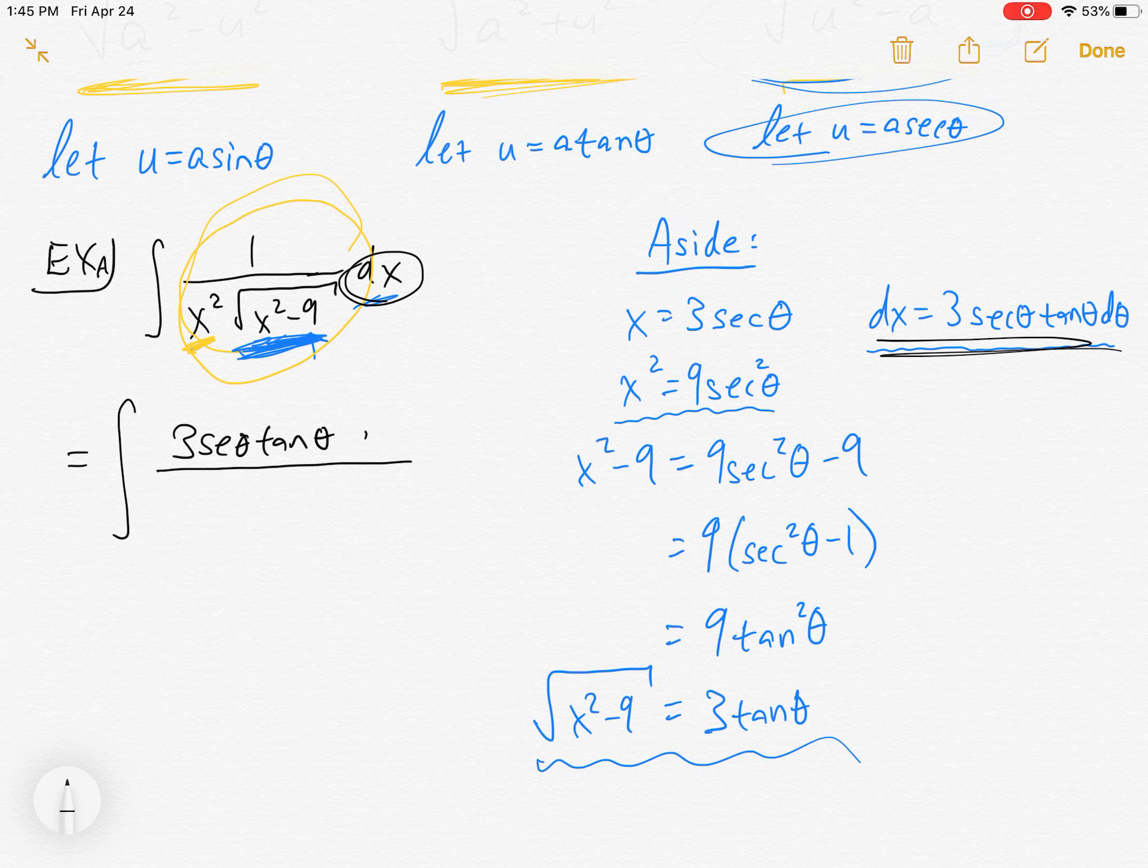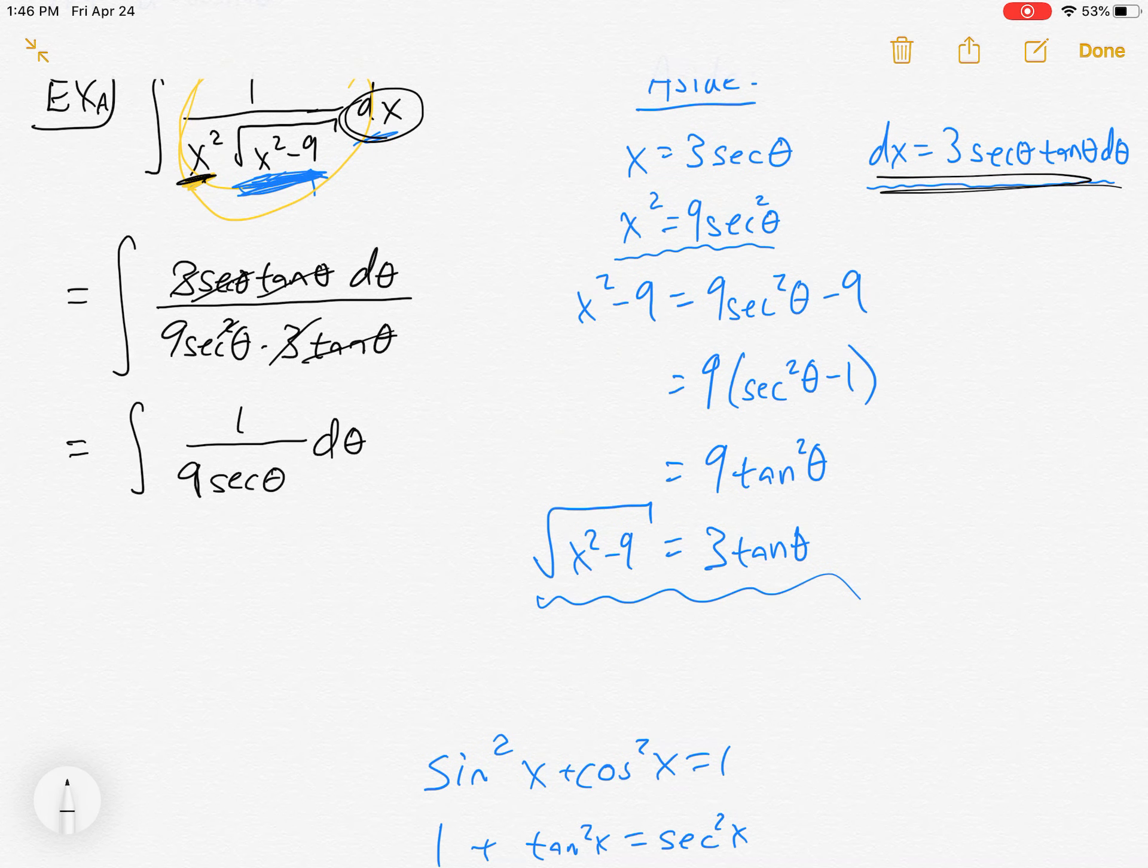So that is ready to go as well. Plugging in now, I have everybody accounted for. We have integral of, by the way the dx can go in the numerator because it's assumed to be in the numerator. So I usually put all this stuff in the numerator: 3 secant theta tangent theta d theta. Then down below I have the x squared which we said was 9 secant squared theta, just plugging everybody in. And then I had the square root of x squared minus 9 which is 3 tangent theta. Usually you see lots of stuff cancel.